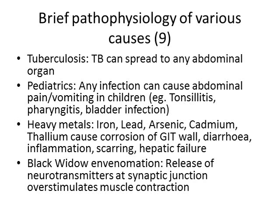If a patient ingests heavy metals, that causes corrosion of the GIT wall, bloody diarrhea, and as healing occurs, inflammation and scarring. Worst case, hepatic inflammation and hepatic failure — all of which can cause abdominal pain. The black widow spider toxin releases neurotransmitters at synaptic junctions of muscles, causing overstimulated muscles, hyperactivity of the GIT, diarrhea, intense cramping pains, before progressing to full body convulsions and potentially death unless spider anti-venom is given.